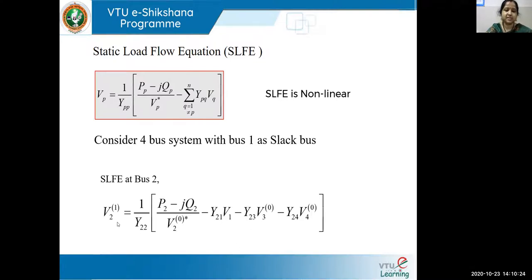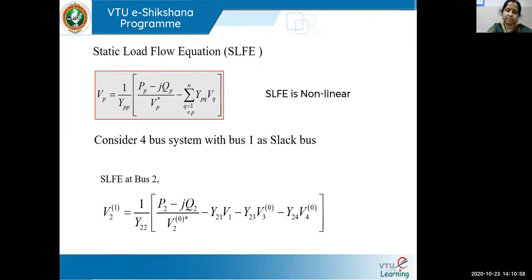When calculating the second bus voltage at the first iteration, I consider the third and fourth voltages as initial values, which is 1 + j0. The values Y21, Y23, Y24 come from the Y-bus, which is why we first learn Y-bus formation. V1 is already specified as the slack bus voltage. V2 is also initialized as 1 + j0 since bus two is also a PQ bus.